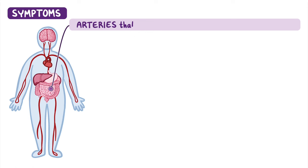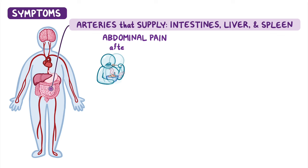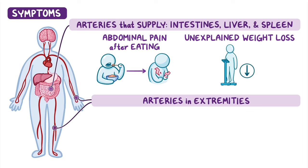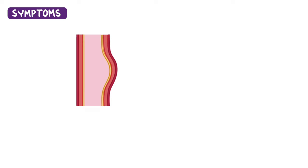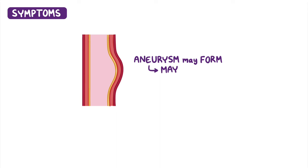Fibromuscular dysplasia involving the arteries that supply the intestines, liver, and spleen can result in abdominal pain after eating and unexplained weight loss. Narrowing of the arteries in the extremities can cause limb discomfort with exercise or lead to unequal blood pressure in the arms. Finally, if vessel walls start to bulge out through the weakened arterial walls, aneurysms may form, and the affected artery may dissect or tear.